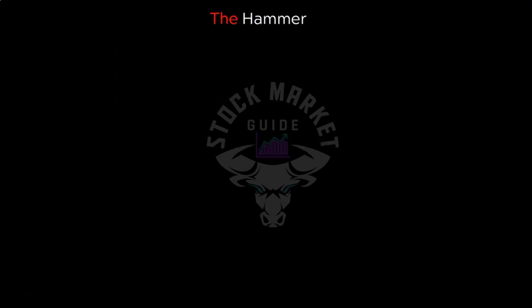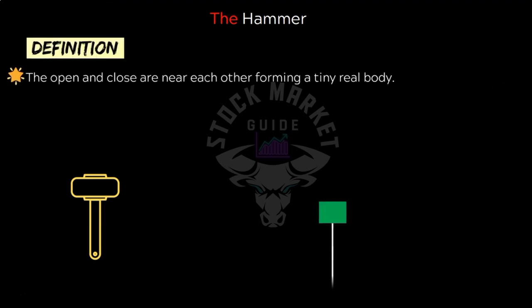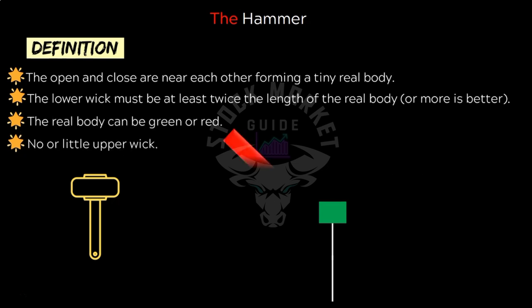Let's start with the hammer pattern. The name hammer comes from the fact that the shape of this pattern looks like a hammer. The open and close are close to each other forming a tiny real body. The lower wick must be at least twice the length of the real body, or more the better. The real body can be green or red.